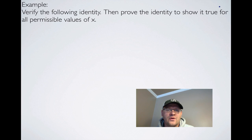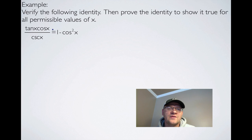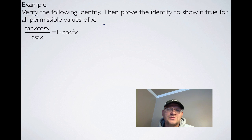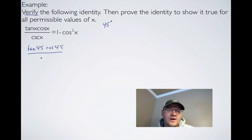First example: verify the following identity, then prove the identity — show it true for all permissible values of x. Our identity is: tan x times cos x divided by cosecant x should equal 1 minus cosine squared x. To verify the identity, we pick a value for x — an angle — and plug it in everywhere. I'm going to choose 45 degrees.